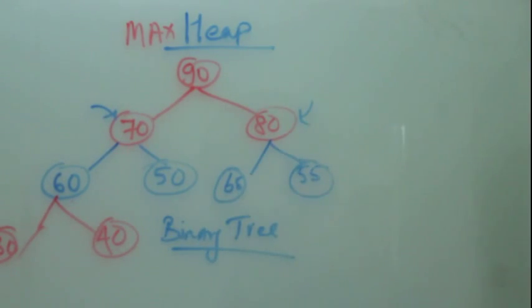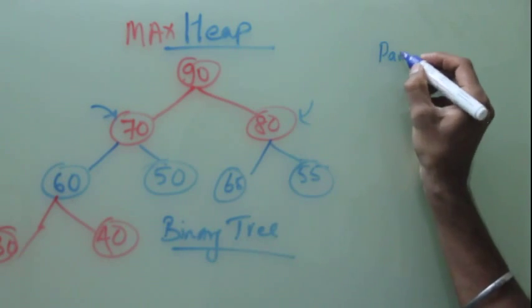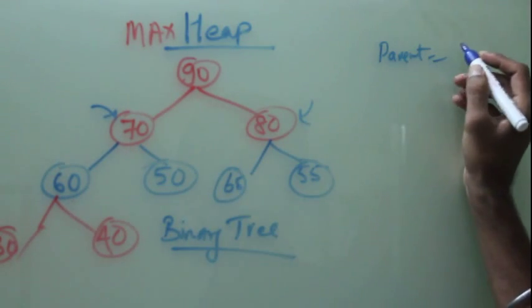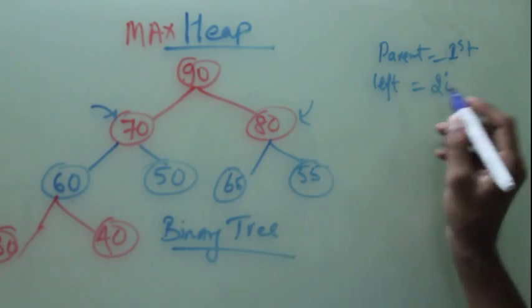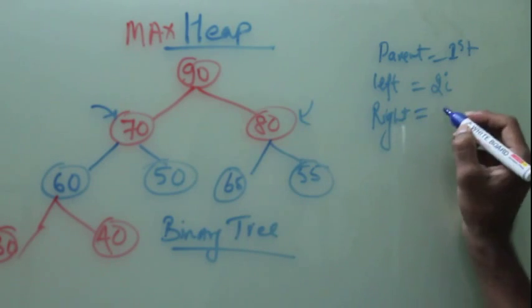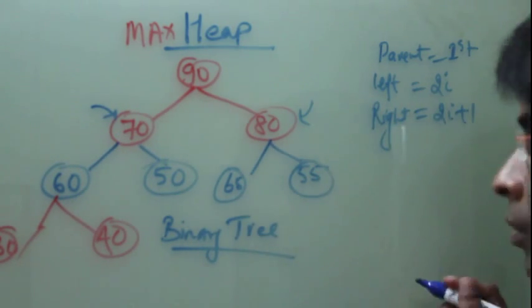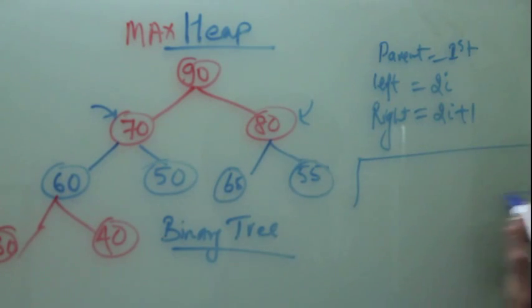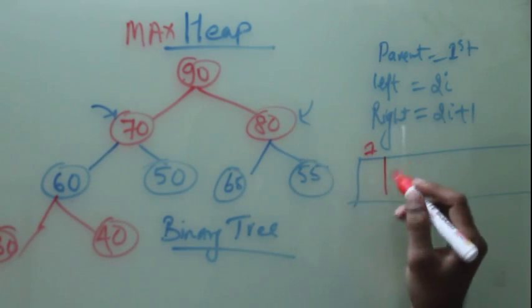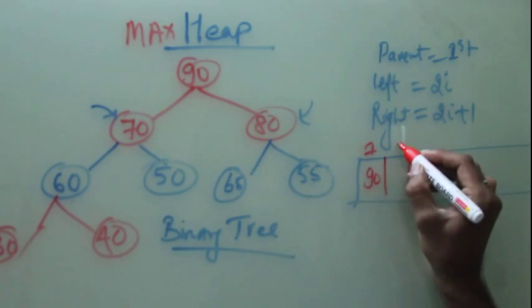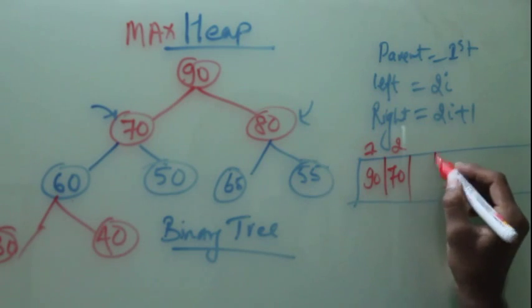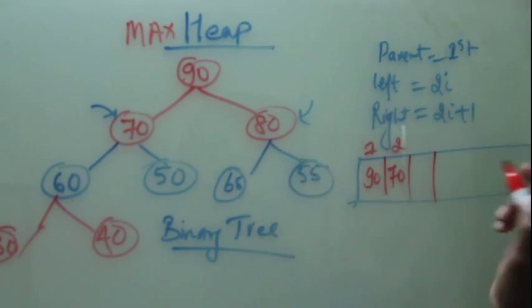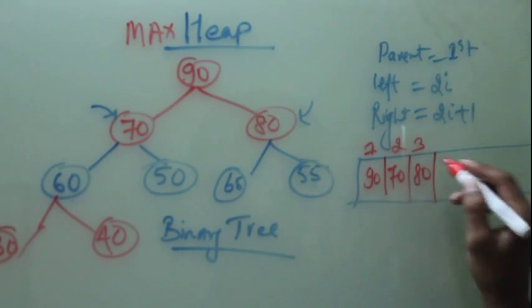Quick recap. Binary tree property means the parent element will be stored at the first location of the array. The left child will be stored at 2 times i location. The right child will be stored at 2i plus 1 location. So if we create an array, the first element will be 90. The second element, 2 into i, will be 70. The third location will be 80, right side.